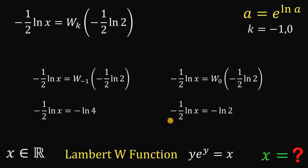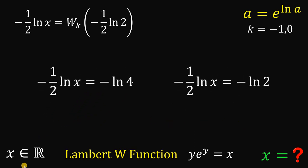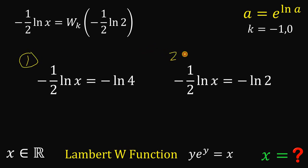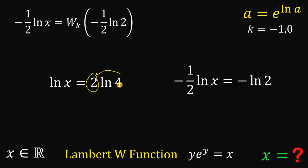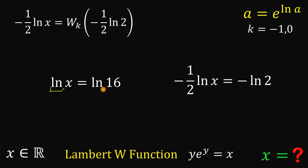Using those values, we can now solve for x. For the first case, multiply both sides by −2. We cancel the −1/2 coefficient, giving ln(x) = 2·ln(4). Putting the 2 in the exponent of 4, we get ln(x) = ln(4²) = ln(16). Since natural log is on both sides, x = 16. That is our first value.